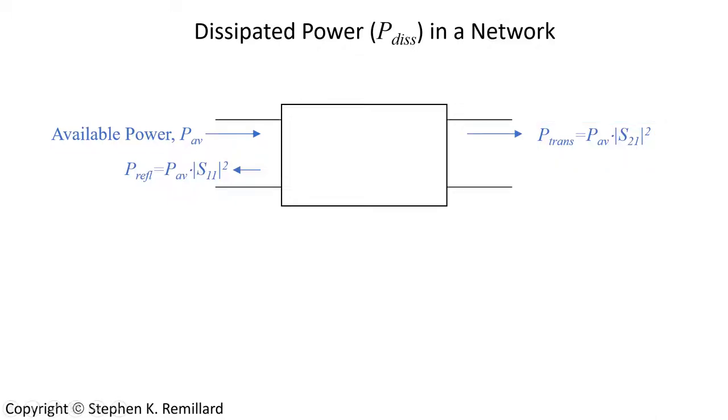Now some of the power that comes into the device doesn't actually make it out the other side. So where does it go? It gets dissipated, becomes thermal energy inside the device. Energy conservation suggests then that these add up. The available power is going to add up to the reflected power, the dissipated power, and the transmitted power.